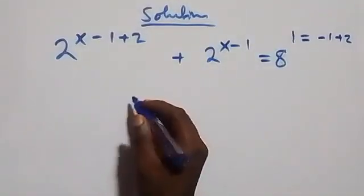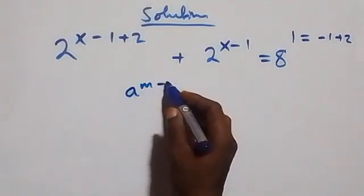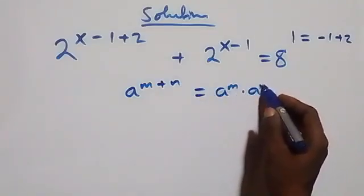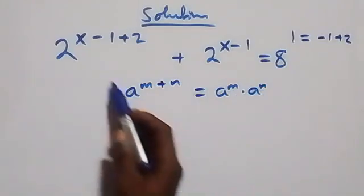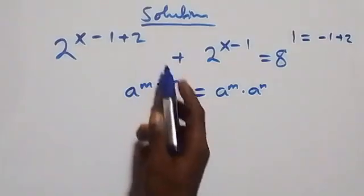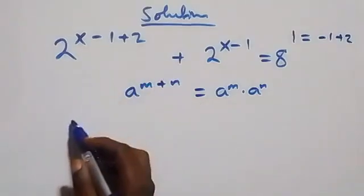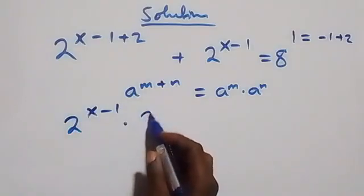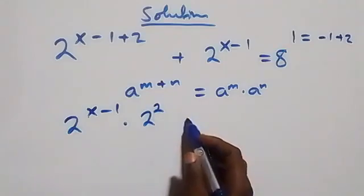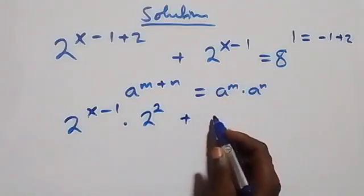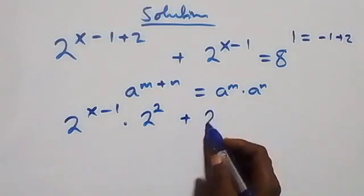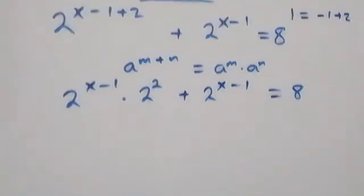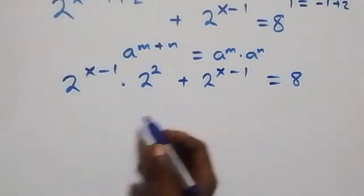From here, we follow the law of indices: a raised to power m plus n equals a raised to power m times a raised to power n. We treat x minus one as m and two as n. So what we have becomes two raised to power x minus one times two raised to power two, plus two raised to power x minus one, equals eight. Two raised to power x minus one is common.